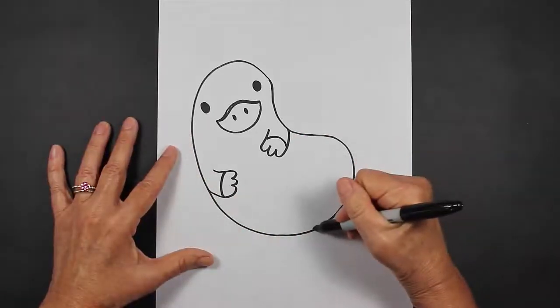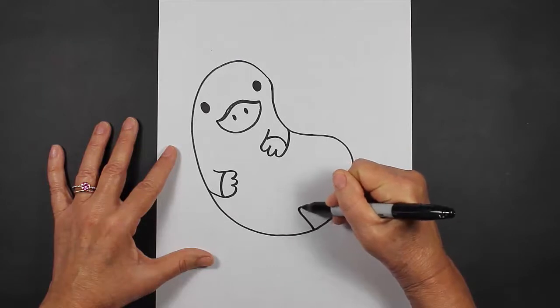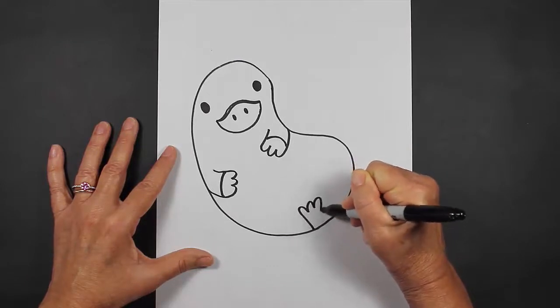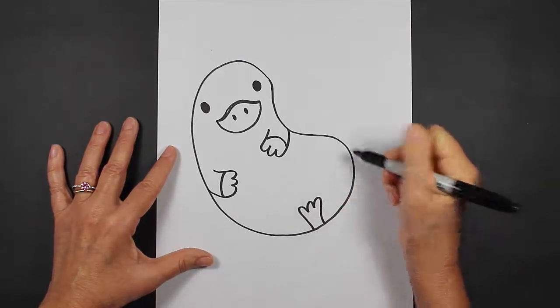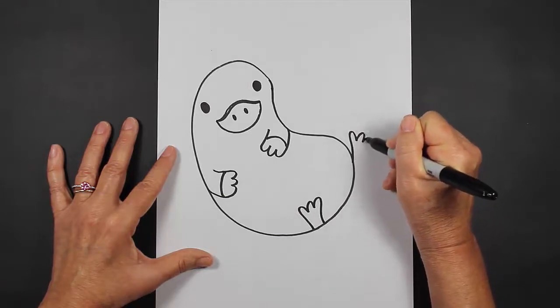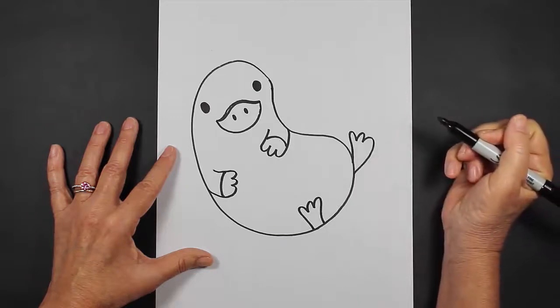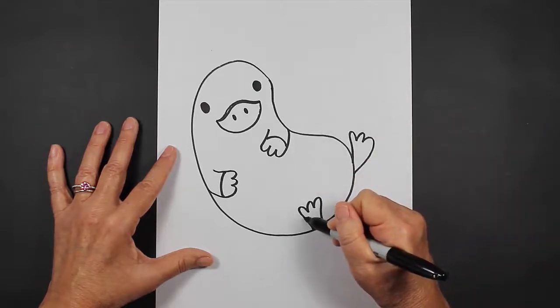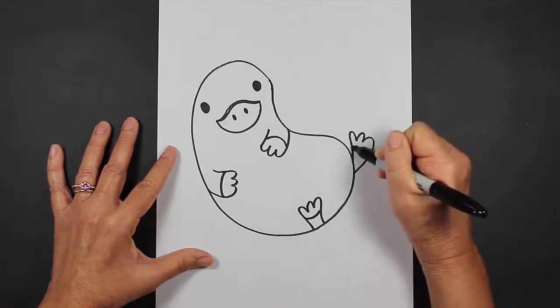All right, for his back feet, we're going to come up, and we're going to make his toes, and then come in. And then this one's going to stick out a little bit this way. It's almost like he's playing on his back. And then we're going to make curved lines like this.